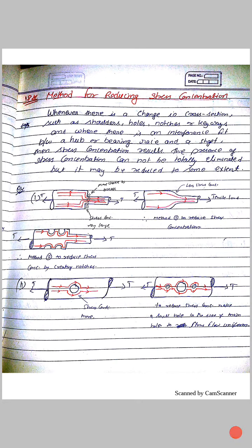Methods for Reducing Stress Concentration: Whenever there is a change in cross section such as shoulders, holes, notches, or keyways, and where there is an interference fit between a hub or bearing race and a shaft, stress concentration results. The presence of stress concentration cannot be totally eliminated, but it may be reduced to some extent.